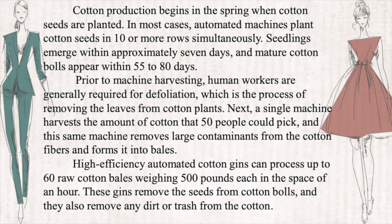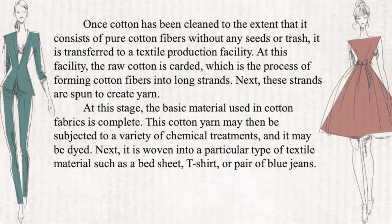High-efficiency automated cotton gins can process up to 60 raw cotton bolls weighing 500 pounds each in the space of an hour. These gins remove the seeds from the cotton bolls and also remove any dirt or trash from the cotton. Once cotton has been cleaned so that it consists of pure cotton fibers without any seeds or trash, it is transferred to a textile production facility. At this facility, raw cotton is carded, which is the process of forming cotton fibers into long strands. Next, these strands are spun to create yarn. This cotton yarn may be subjected to a variety of chemical treatments and it may be dyed, then it is woven into a particular type of textile material such as bed sheets, t-shirts, or a pair of jeans.